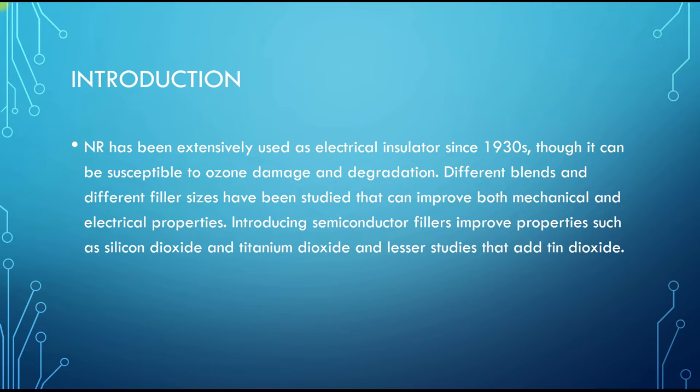Natural rubber has been used extensively as electrical insulator since the 1930s though it can be susceptible to ozone damage and degradation. Different blends and different filler sizes have been studied that can improve both mechanical and electrical properties. Introducing semiconductor fillers improves properties such as silicon dioxide and tin dioxide, though there are lesser studies that add tin dioxide.